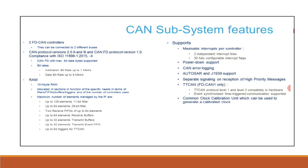RAM: 10 kilobytes of RAM is allocated in function of the specific needs in terms of filters, FIFOs, buffers, triggers, and the number of controllers used. Maximum number of elements managed by the IP: up to 128 elements for 11-bit filters, up to 64 elements for 29-bit filters, two receive FIFOs of up to 64 elements each, up to 64 receive buffers, up to 32 transmit buffers, up to 32 transmit event FIFO elements, and up to 64 triggers for TTCAN.